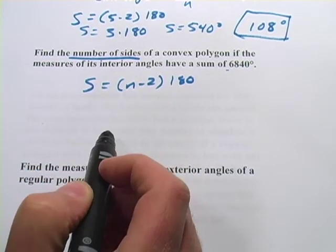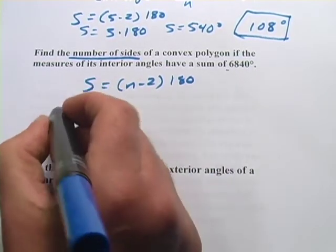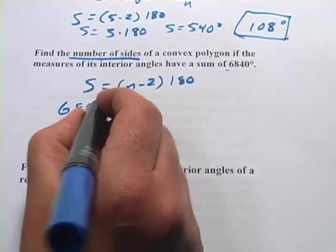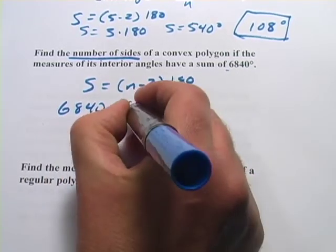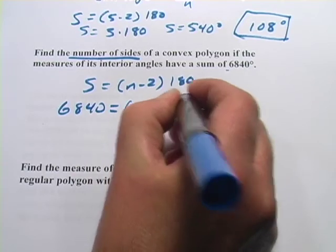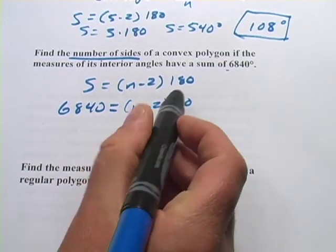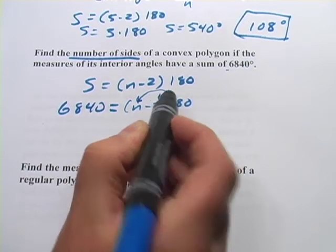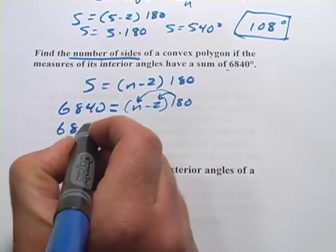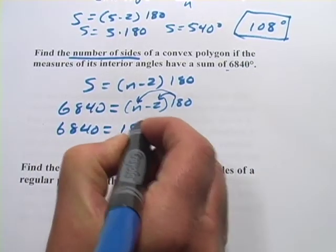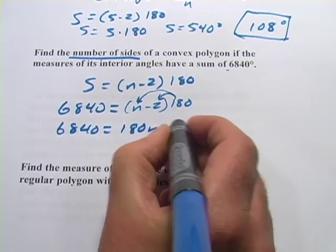Let's plug in the information we have. S is 6840, and then we have n minus two times 180. What I want to do is distribute the 180 here, so I'm going to multiply that through. So, we get 6840 equals 180n minus 360.